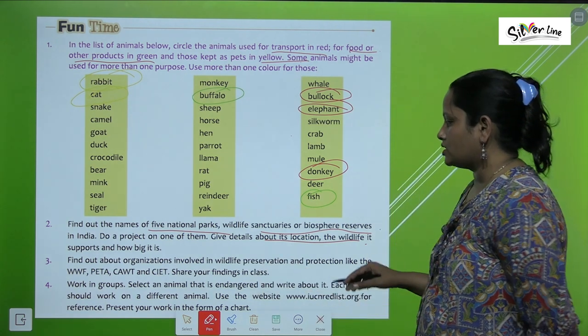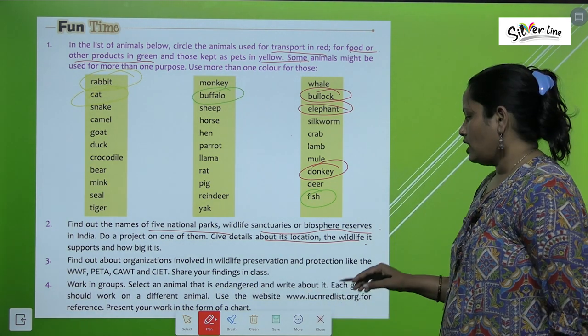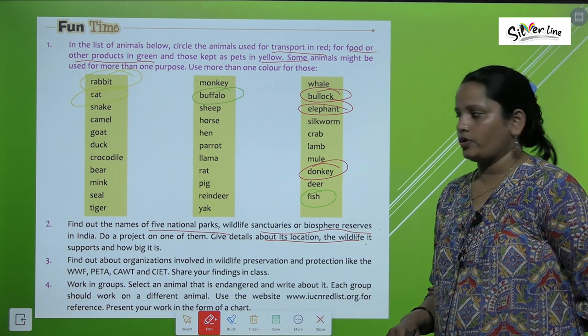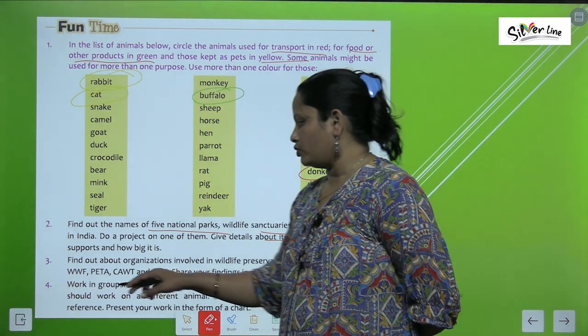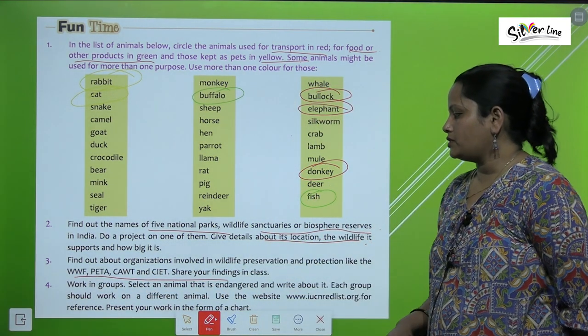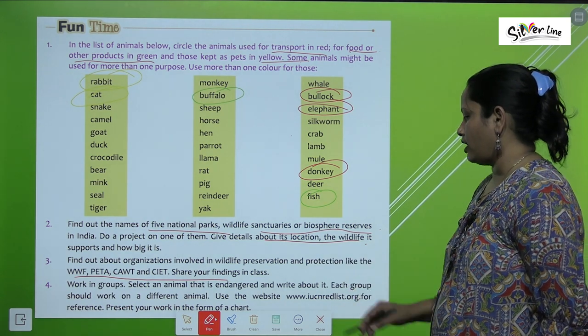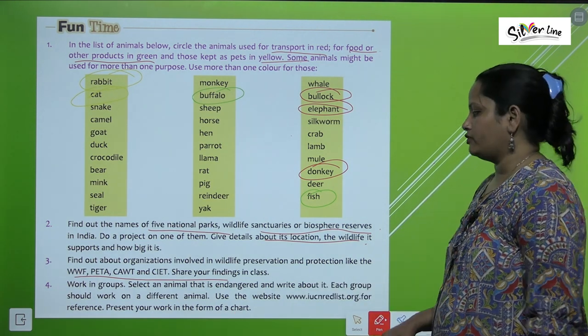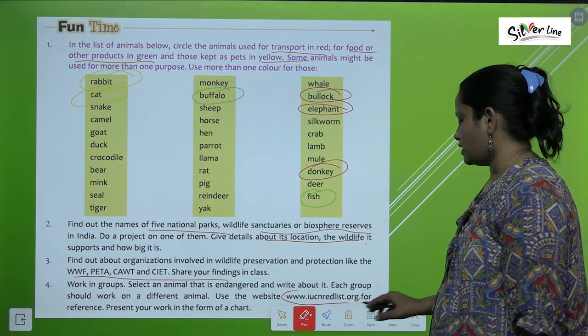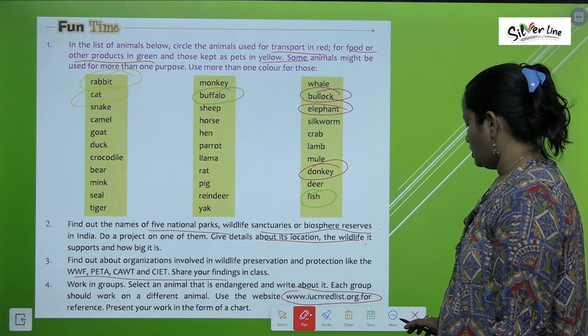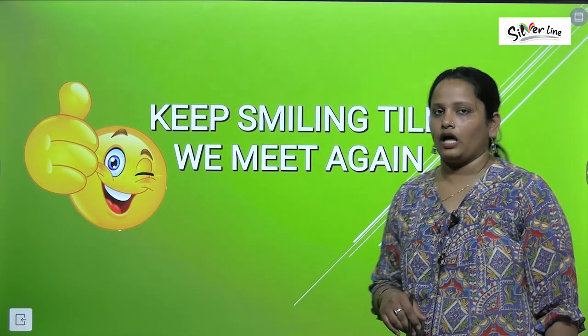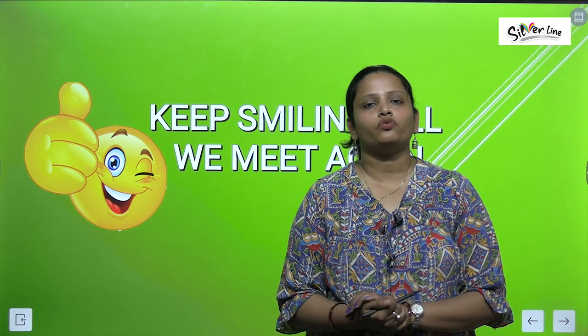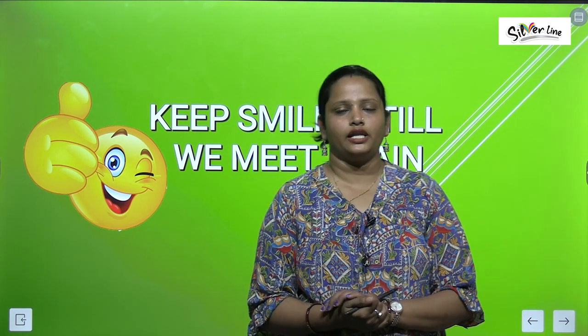Find out about organizations involved in wildlife preservation and protection, like the WWF. Work in groups — select any animal that is endangered and write about it. Each group should work on a different animal and use the provided website to find more details. Children, these questions you have to do on your own. With this we have completed the chapter — I hope you understood it. Complete the given exercise. I will be meeting you soon with a new video. Till then, stay elated, keep smiling, and take care.